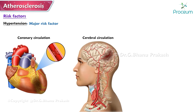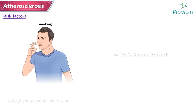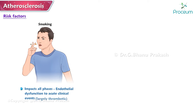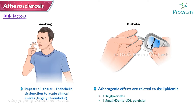Hypertension can increase arterial wall tension, potentially leading to disturbed repair processes and aneurysm formation. Cigarette smoking is another major risk factor and impacts all phases of atherosclerosis, from endothelial dysfunction to acute clinical events, the latter being largely thrombotic. Regarding diabetes, its atherogenic effects are related to dyslipidemia.